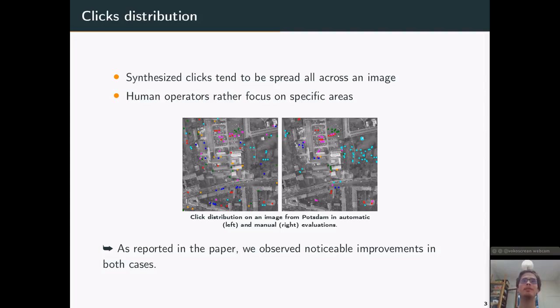We also analyzed the distribution of the annotations. So as I said, we automatically evaluated our framework, but we also evaluated it with a real user in the loop. And as we found out, a real user tends to focus its clicks on specific areas, as it can be shown in the right image, while synthesized clicks mostly tend to be spread all across the image, as it can be shown on the left image of the figure. But as we reported in the paper, we observed noticeable improvement of the metrics in both cases. So this shows that the two evaluation processes showed that our framework is efficient.